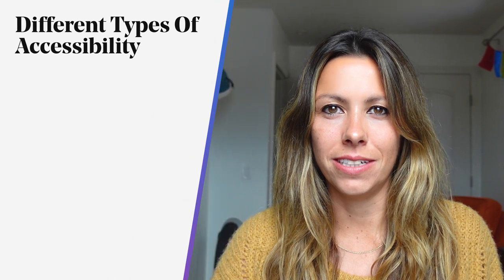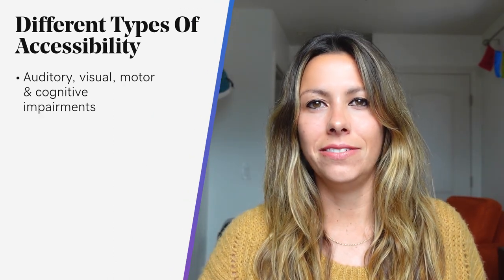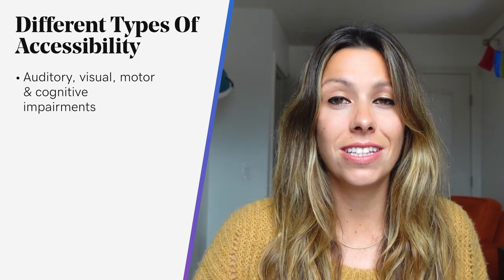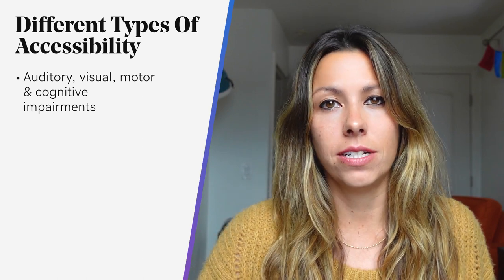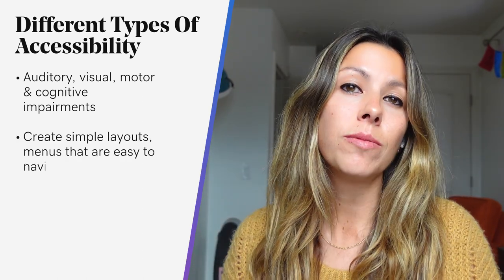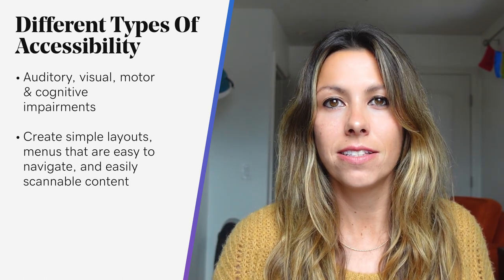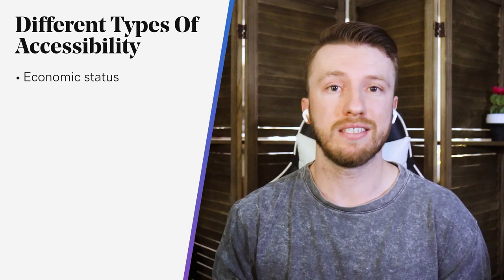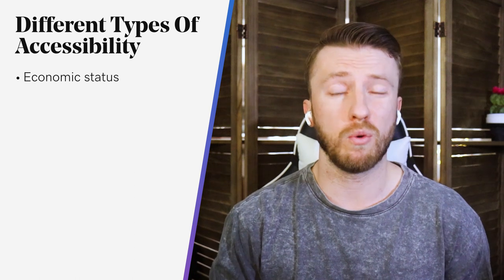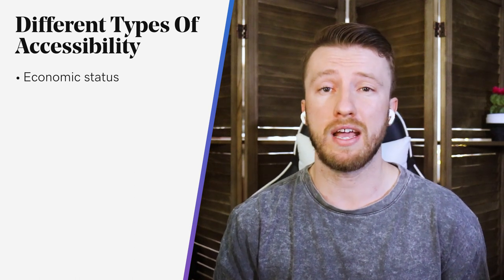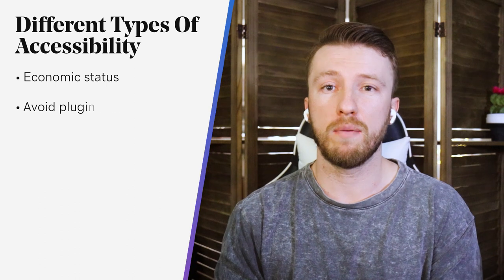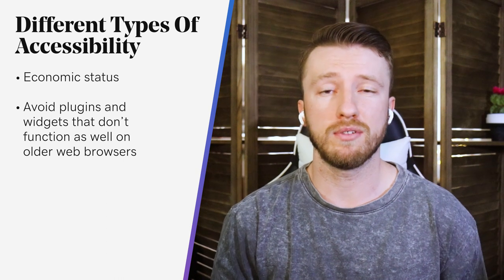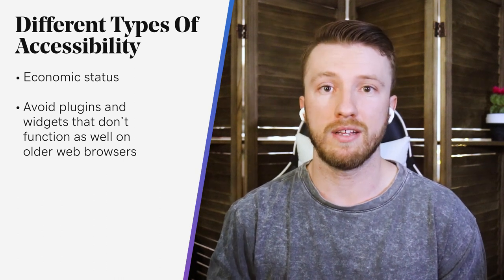Let's get into the types of accessibility. You've got auditory, motor, cognitive, and visual impairments. It's predicted that about 15% of the world's population — around 1 billion people — live with a disability, so by making websites more accessible, you're able to reach a larger audience. Another type of accessibility is economic status. Many people around the world don't have the latest smartphone that can run 4G networks or the latest browser operating systems, so you want to make sure that the websites you create are backwards compatible with older generations of phones, computers, laptops, and browsers like Internet Explorer.